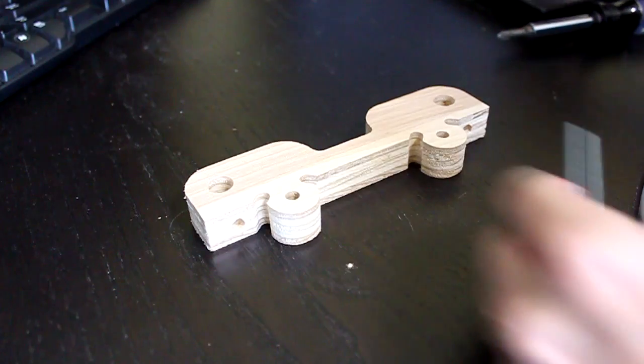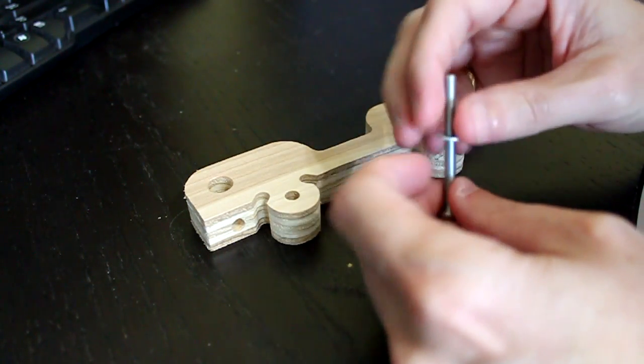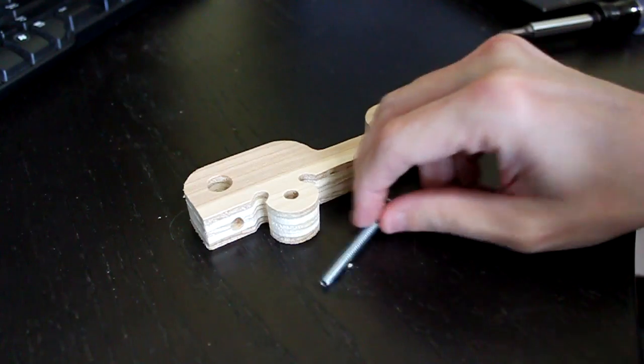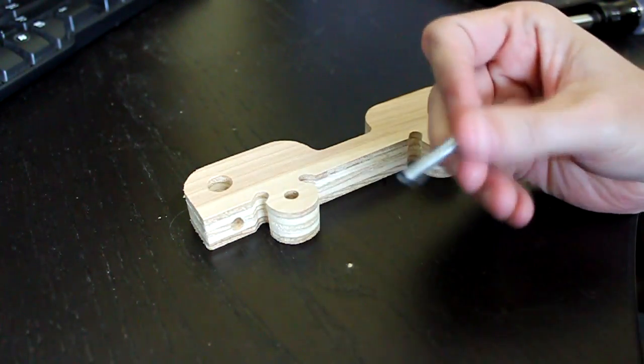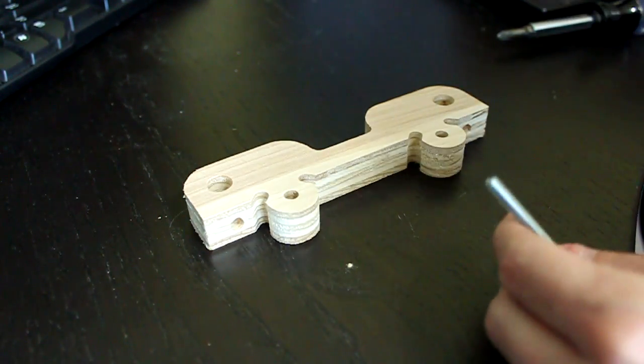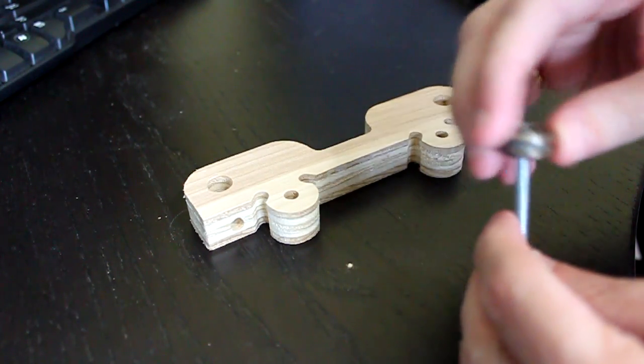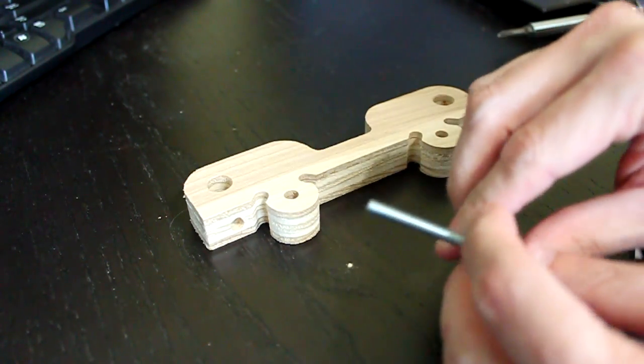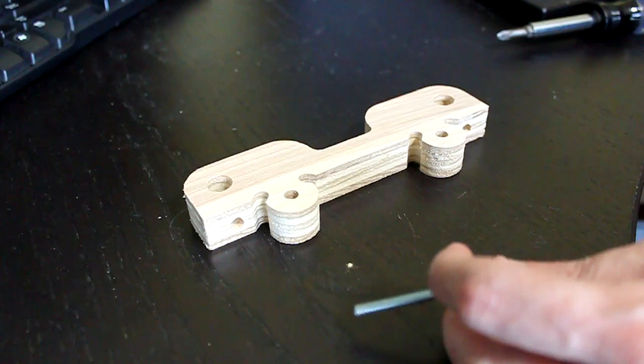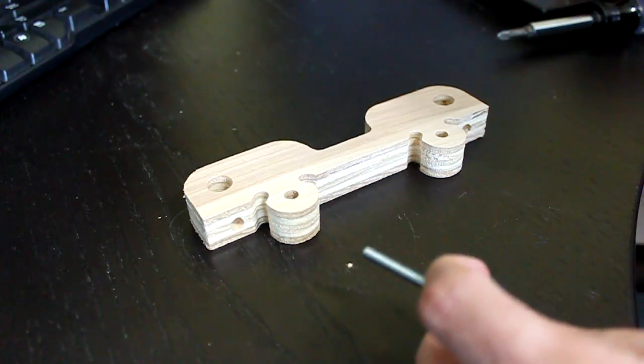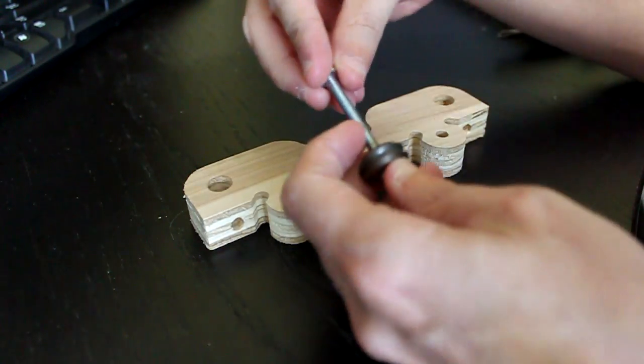In this next step we'll attach bearings on the x-axis bearing mount that will be used as x-axis table guides. For each side you'll need two number 10 screws at least 1.5 inches long.